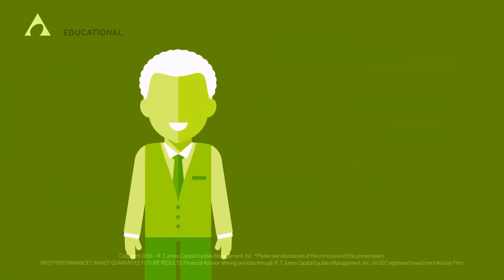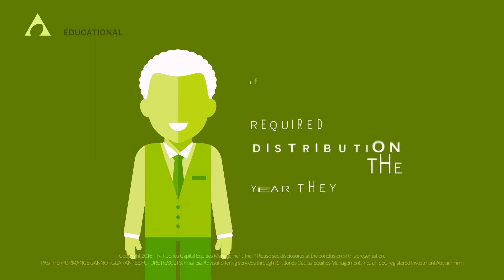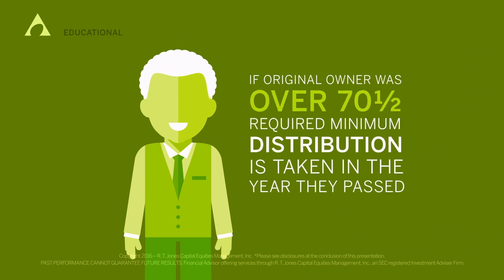You also must make sure that if the original owner was over 70 and a half, a required minimum distribution was taken from the account in the year they passed.